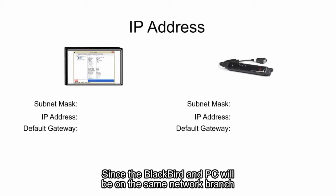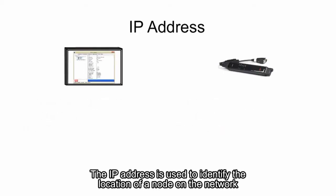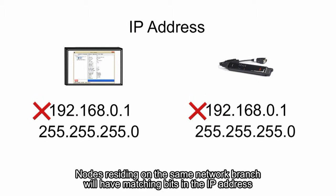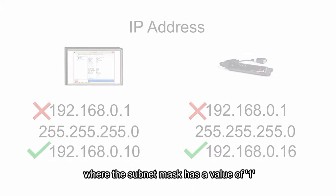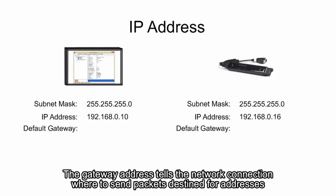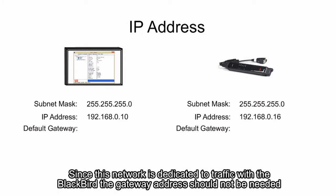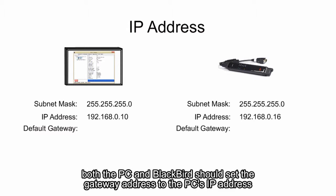Since the Blackbird and PC will be on the same network branch, their Subnet Mask must be the same. The IP address is used to identify the location of a node on the network — no two nodes on a network can have the same IP address. Nodes residing on the same network branch will have matching bits in the IP address where the Subnet Mask has a value of 1. The gateway address tells the network connection where to send packets destined for addresses that do not reside on the same network branch. Since this network is dedicated to traffic with the Blackbird, the gateway address should not be needed, but to make sure the PC is not slowed down by other running applications, both the PC and Blackbird should set the gateway address to the PC's IP address.